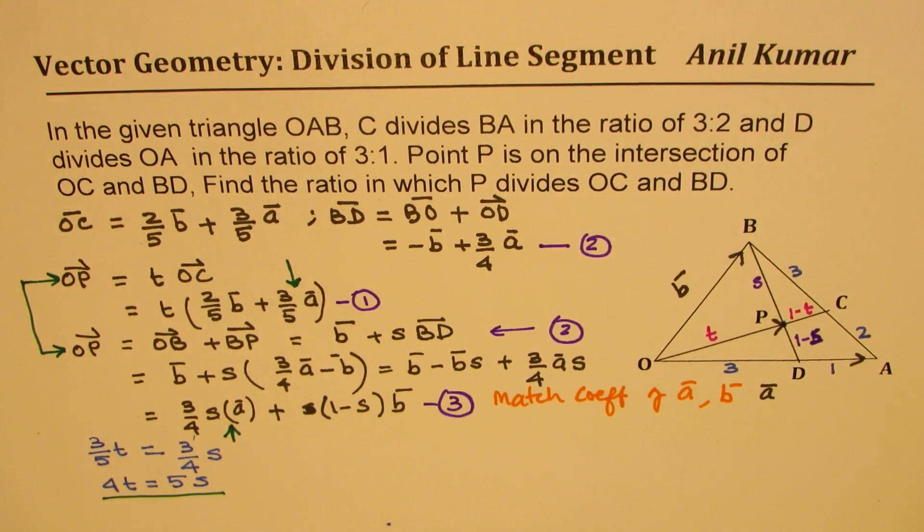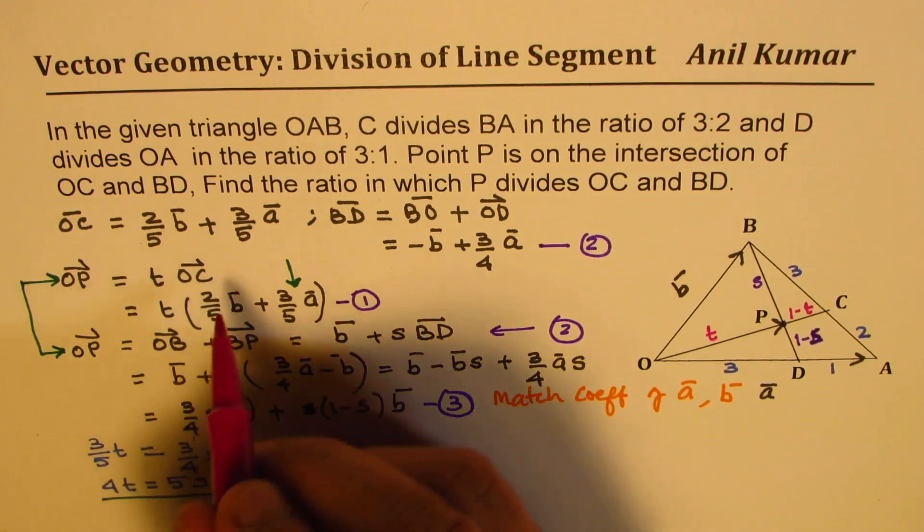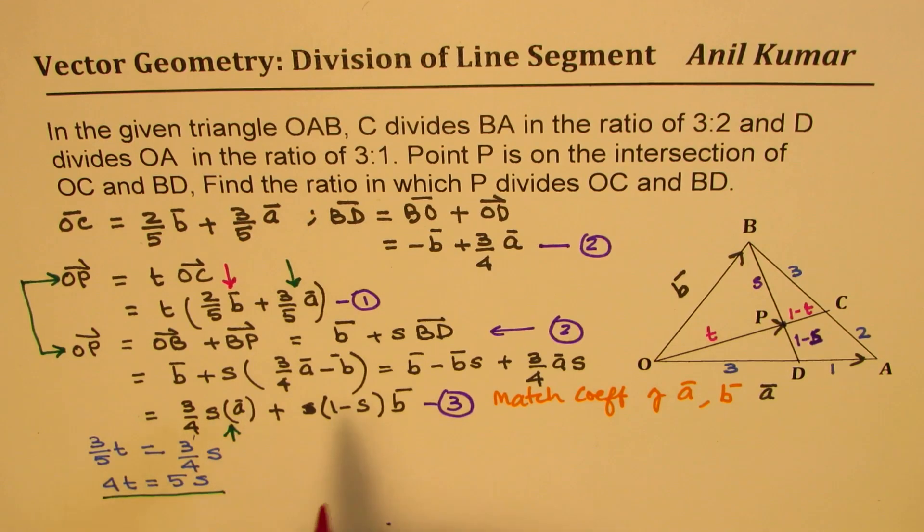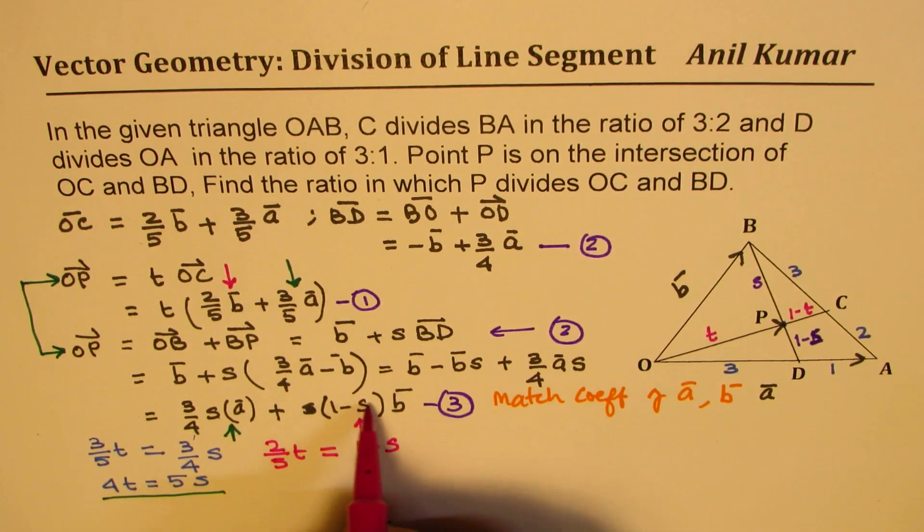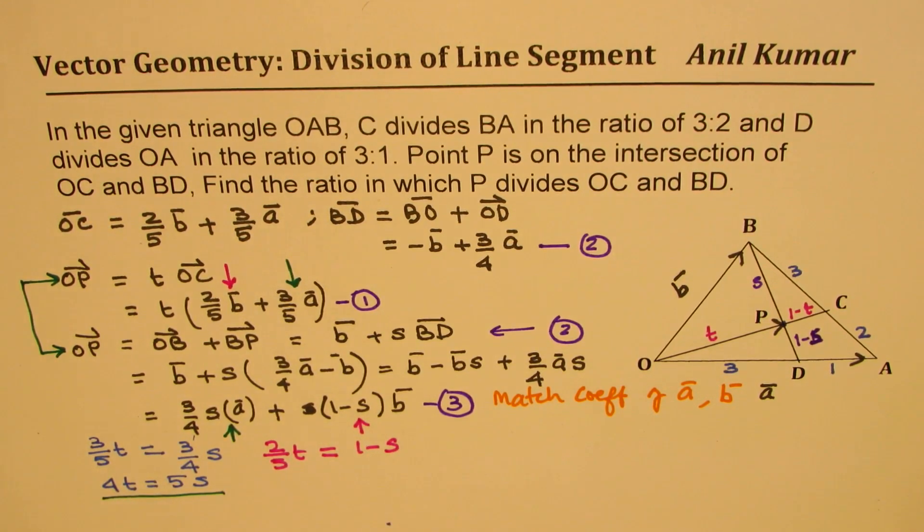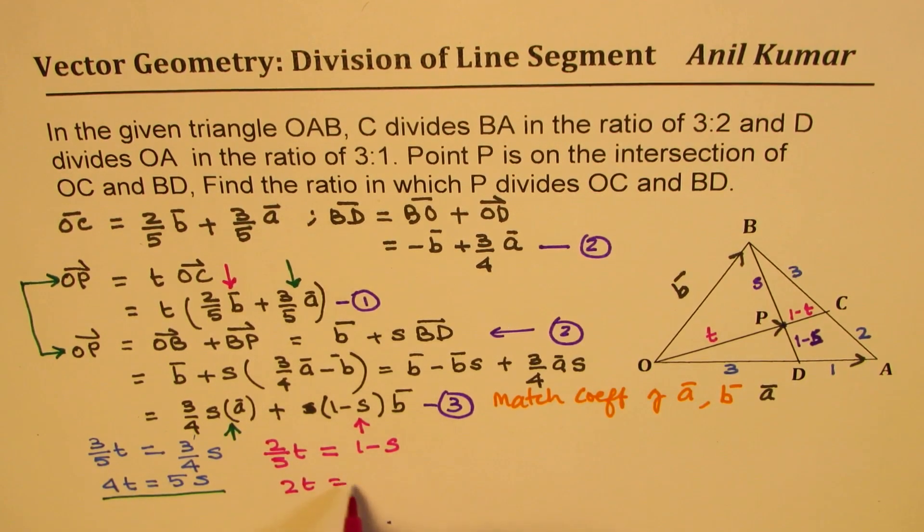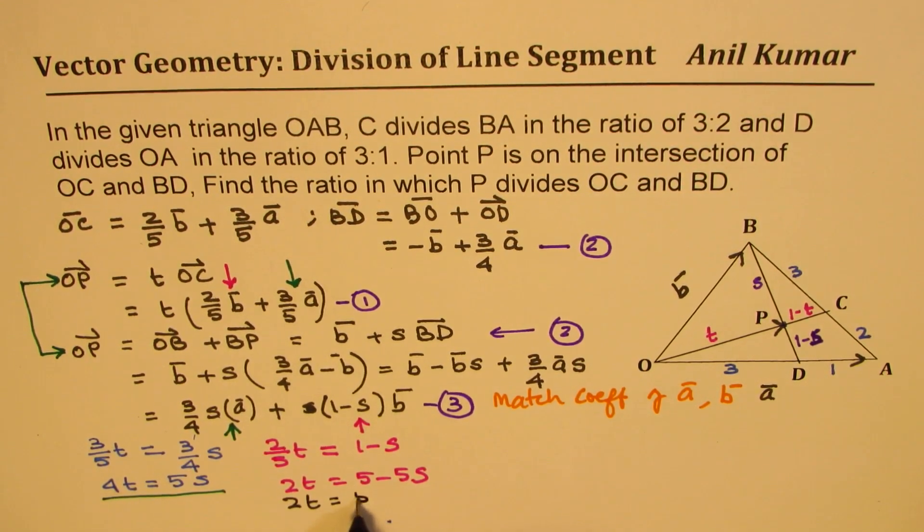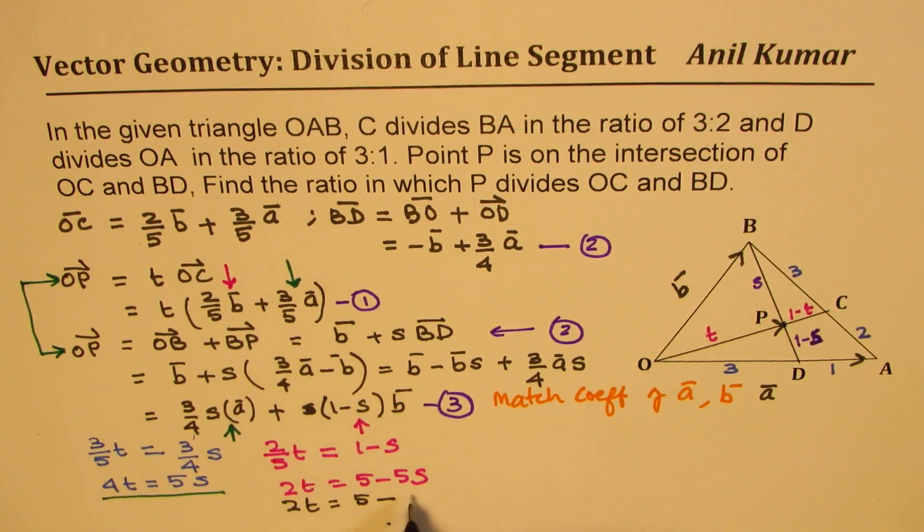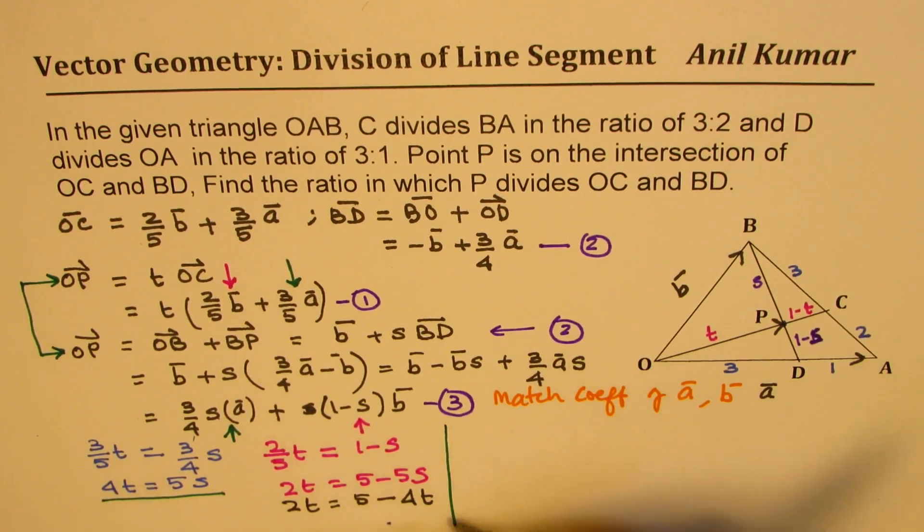Now, let us compare the coefficients of B, which are these. Here the coefficient is this. So we will have (2/5)T equals 1 minus S. So that is the coefficient of B. So we can actually cross multiply. So we have 2T equals 5 minus 5S. Now 5S is 4T, right? So we will substitute this. 5S is 4T. So we get 2T equals 5 minus 5S is 4T. 4T.